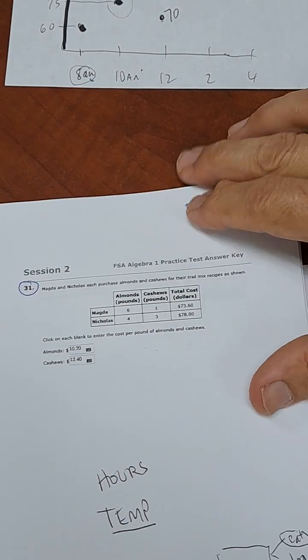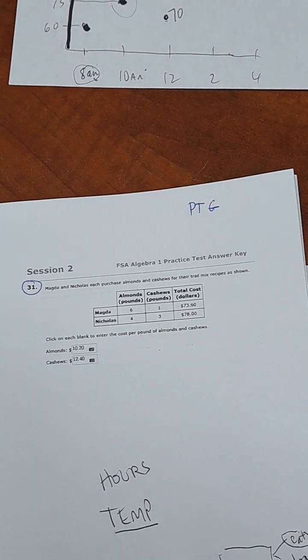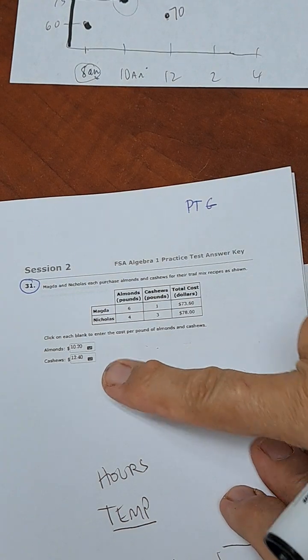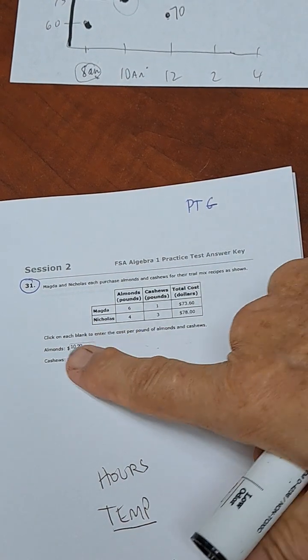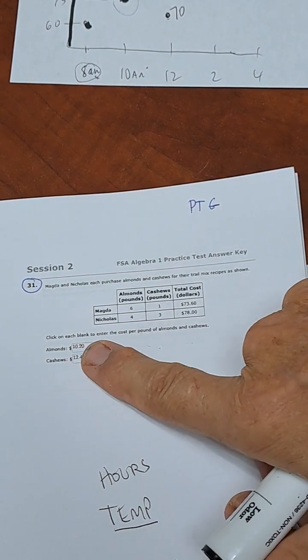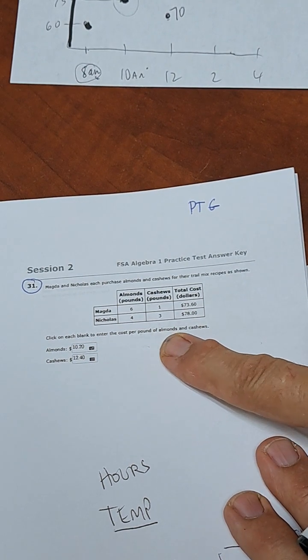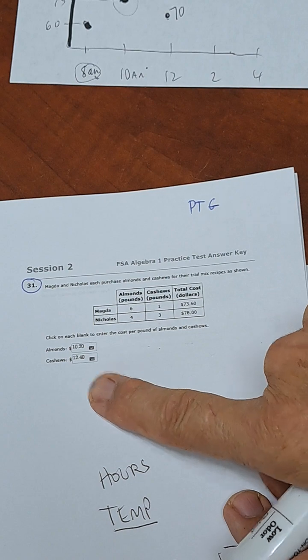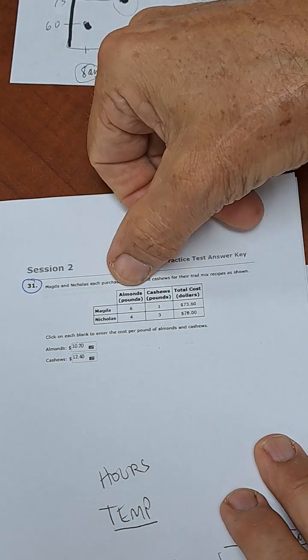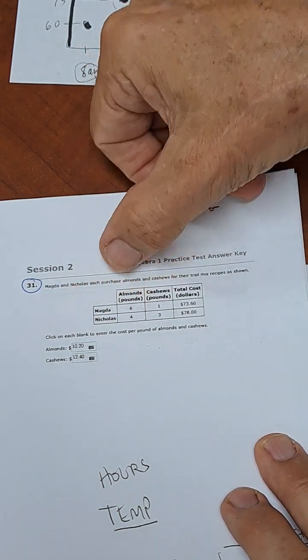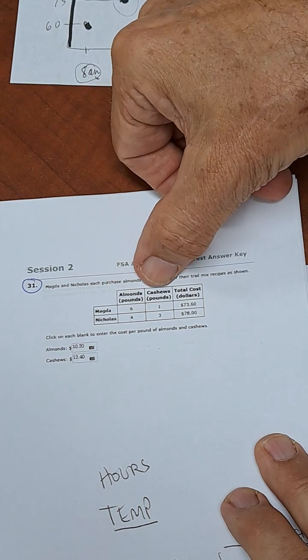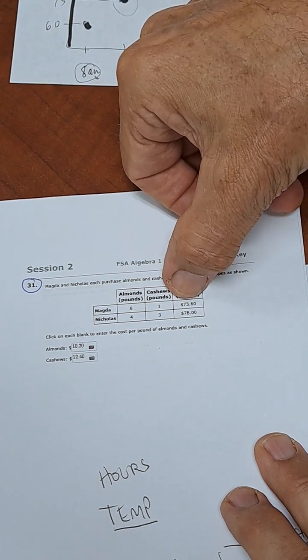The first thing to see in this question is that they're going, we look straight at the answer. We're saying, click on the blank to enter the cost per pound of the almonds and the cashews. So it turns out that we know that these two people bought some almonds and some cashews, and they spent different amounts.